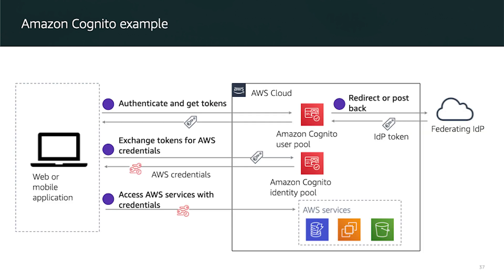Here is an example of how to employ Amazon Cognito. The goal is to authenticate a user using Amazon Cognito and then grant that user access to another AWS service. In the first step, the app user signs in through an Amazon Cognito user pool and receives a user pool token upon successful authentication. The app then exchanges the user pool token for AWS credentials through an Amazon Cognito identity pool, and finally the app user uses those credentials to access other AWS services.